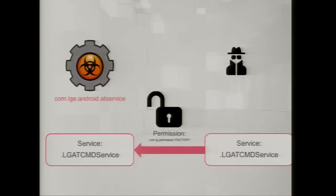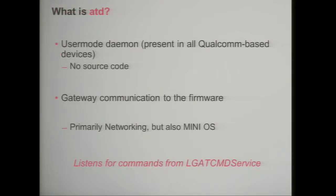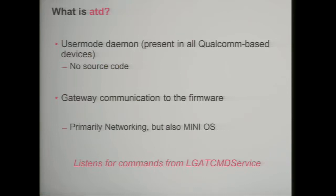Once connected to this service, we can start communicating with ATD — the ATD daemon. ATD is a high-privileged daemon written by Qualcomm and distributed to all Qualcomm-based devices. Unfortunately there's no source code available, so we had to reverse engineer it to understand how to communicate with it. It's the main gateway for communication to the firmware — mainly Wi-Fi, Bluetooth, and the GSM modem — but also to MiniOS, an internal interface used to test the device. Most importantly, it's connected to the LG ATC sending service, which we accessed through the missing file permission.